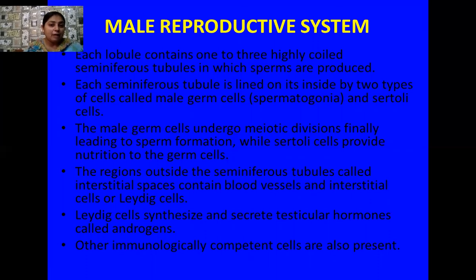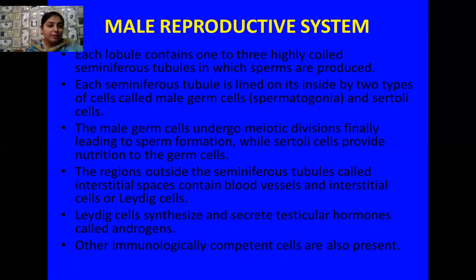The region present outside the seminiferous tubules is known as the interstitial spaces, which contain blood vessels and interstitial cells. Another name for these interstitial cells is Leydig cells. These Leydig cells synthesize and secrete testicular hormones collectively known as androgens, and the chief among these is the male sex hormone testosterone. Besides testosterone, many immunologically competent cells are also present in these interstitial spaces.